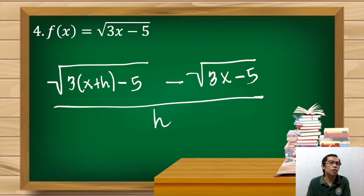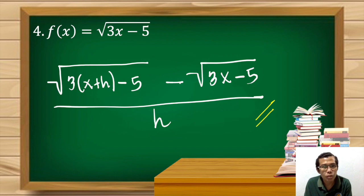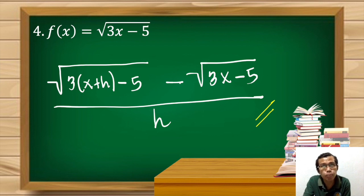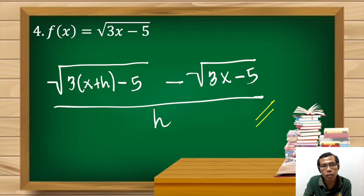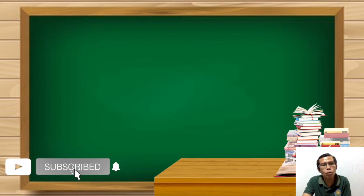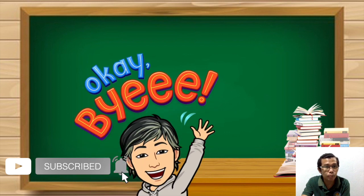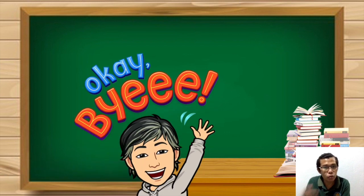Therefore, since there is no simplification for this term, this would become our final answer. When you deal with limits and difference quotients in calculus you will understand why this is not yet the true final answer, but for the meantime this is our final answer. That's all for today — I hope you learned from this discussion and I hope to see you soon on our next video.